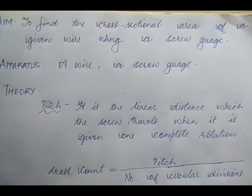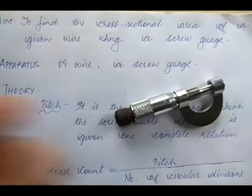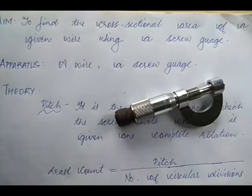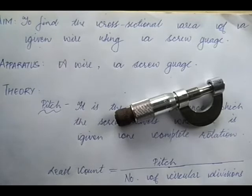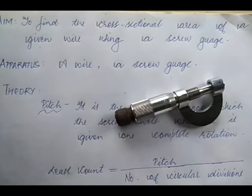This video is about finding the cross-sectional area of a given wire using a screw gauge. This instrument is used to measure very small lengths, like a vernier caliper, but even better. The least count of the vernier caliper was 0.01 centimeters — the smallest length an instrument can measure. The screw gauge has an even smaller least count, so it can measure lengths smaller than the vernier caliper.